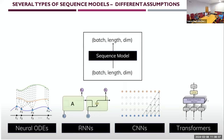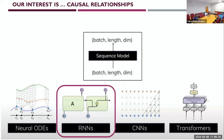We have neural ODEs that harness neural differential equations to model rates of change, RNNs that capture temporal correlations between events that can be far apart, CNNs for time series that use convolutional filters, and transformers that extract semantic correlations within a sequence. Our direction leans more toward RNNs because we are interested in causal relationships between different lags.